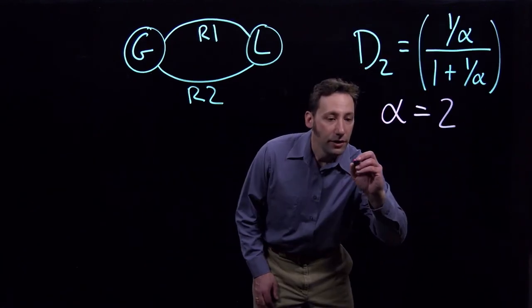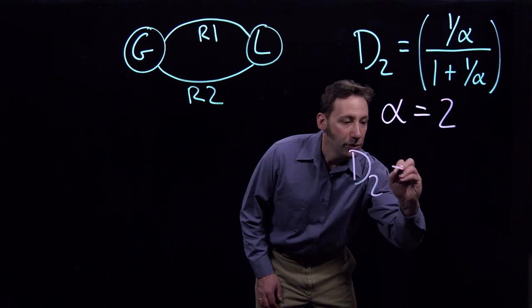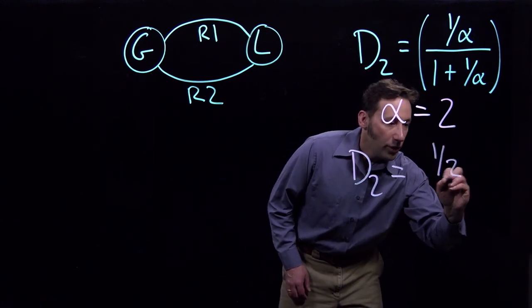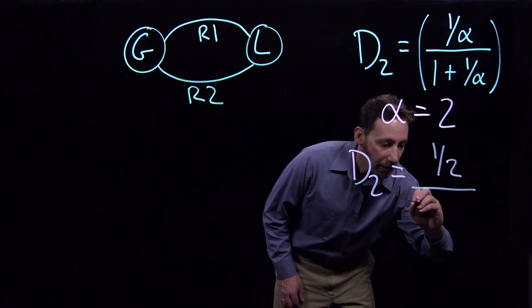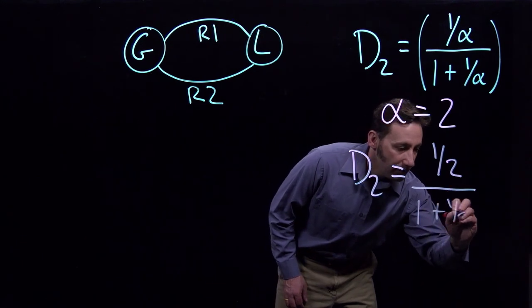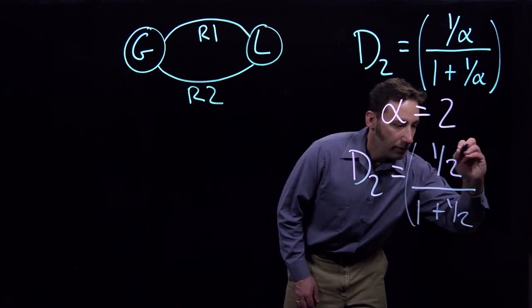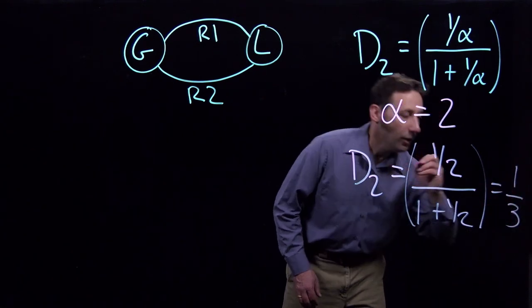And so D2 is going to be equal to 1 over 2 divided by 1 plus 1 over 2, which is 1 third.